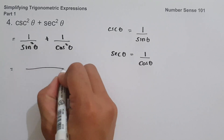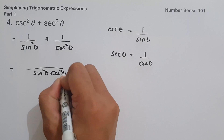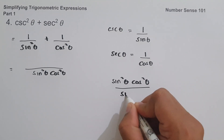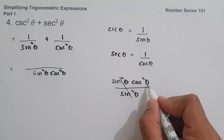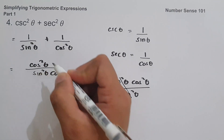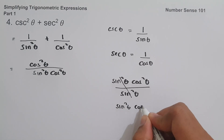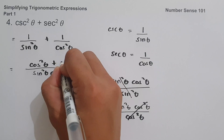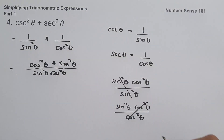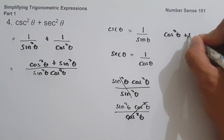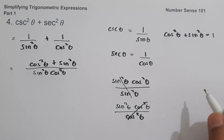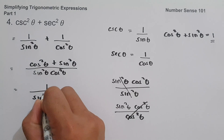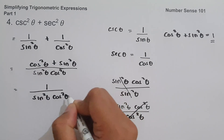To simplify, we place both fractions over a common denominator of sin²θ · cos²θ. The numerator becomes cos²θ + sin²θ. Since cos²θ + sin²θ = 1, the result is 1/(sin²θ · cos²θ). That is our answer.